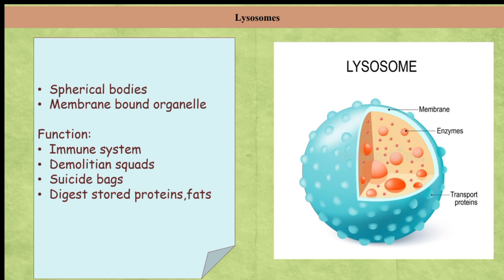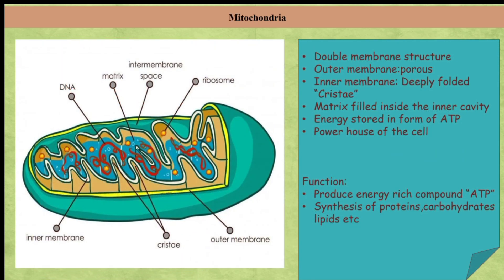Our next organelle is mitochondria. Under the electron microscope, a mitochondrion is seen as a double membrane structure. The outer membrane is porous and the inner membrane is deeply folded — these folds are called cristae. The inner cavity is filled with a proteinaceous gel-like matrix containing ribosomes, phosphate granules, and DNA, so it can produce its own proteins. Energy is stored in mitochondria in the form of ATP (adenosine triphosphate), hence mitochondria is known as the powerhouse of the cell. Its function is to produce ATP and synthesize proteins, carbohydrates, and lipids.